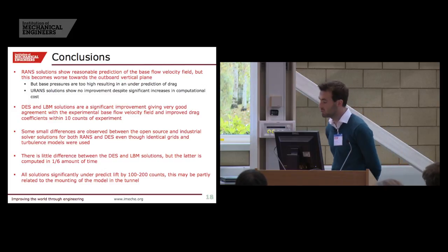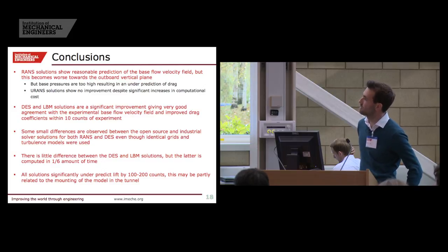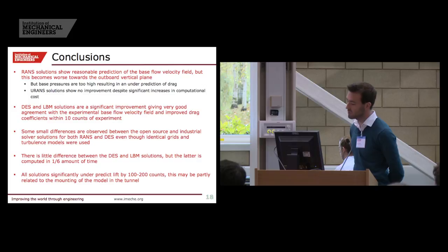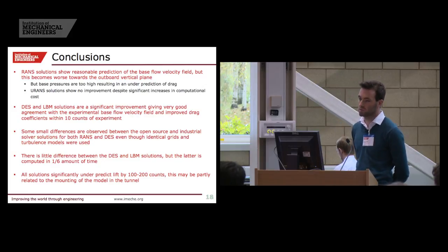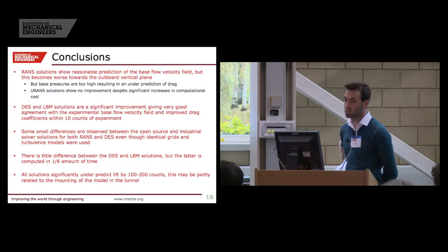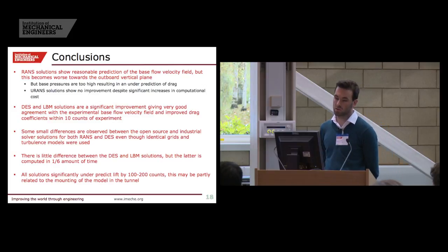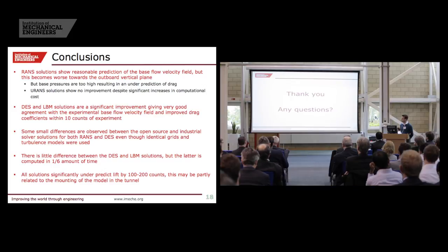To conclude: the RANS solutions show reasonable prediction of base flow velocity field, becoming worse further outboard from the centre line. Base pressures are too high, resulting in under-prediction of drag. U-RANS showed no improvement despite significant increases in computational cost. DES and LBM solutions are a significant improvement, giving very good agreement with experimental base flow velocity field and improved drag coefficients to within 10 counts of the experimental value. Small differences were observed between the open source and industrial solver for both RANS and DES, even with identical grids and turbulence models. Little difference between DES and LBM solutions, but the latter is computed in approximately a sixth of the time. Finally, all solutions were significantly under-predicting lift — for DES and LBM by approximately 100 to 200 counts — possibly partly due to the model mounting in the tunnel, though this is yet to be proven. Thank you — are there any questions?